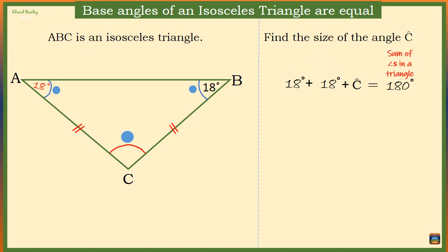So double 18 is 36, plus C equals 180 degrees. Subtracting 36 from both sides of the equation, we have angle C is equal to 180 minus 36 degrees, which is 144 degrees.